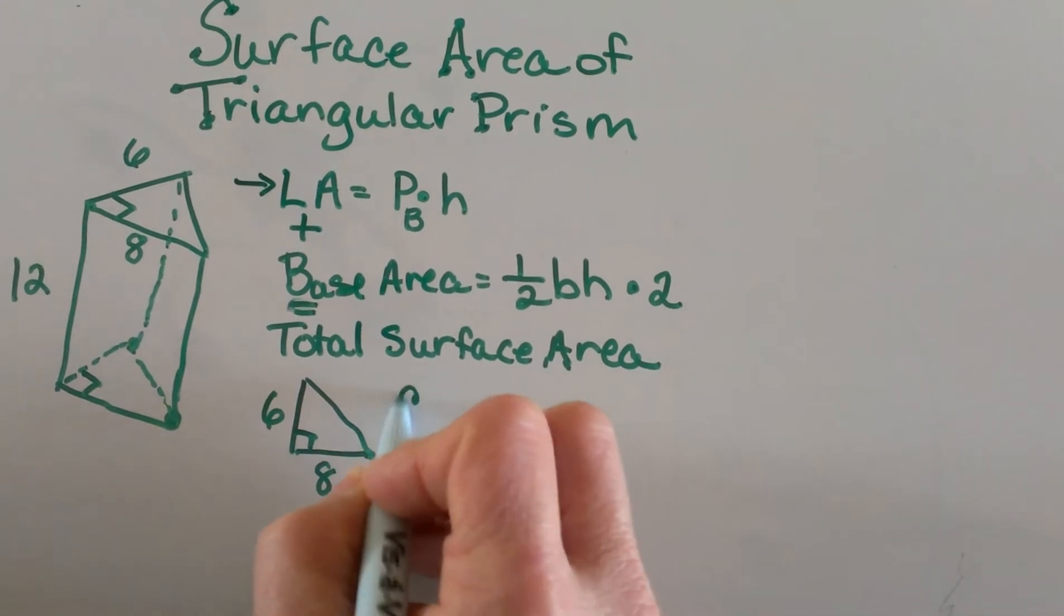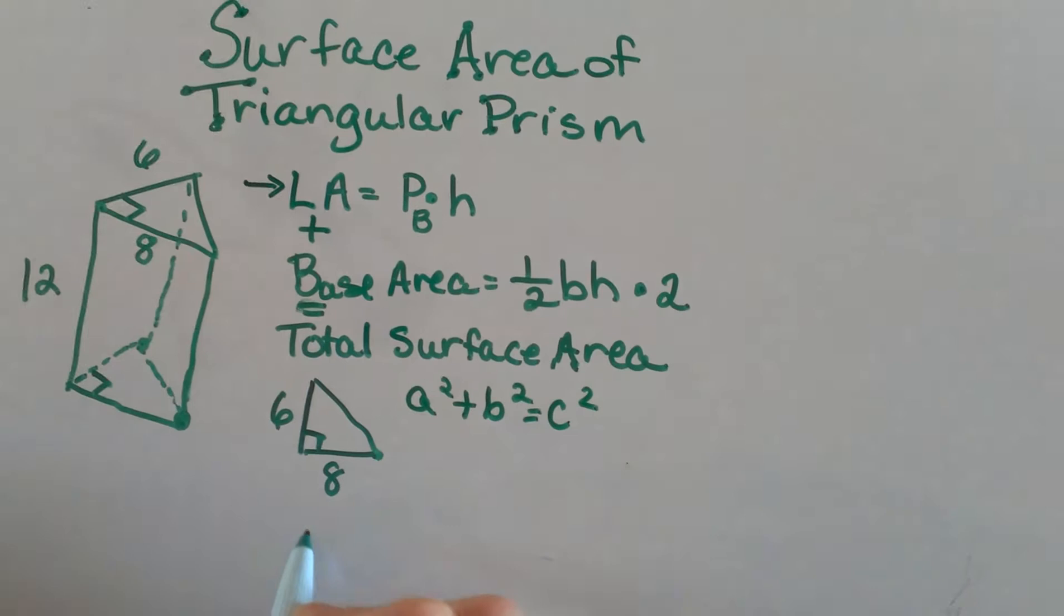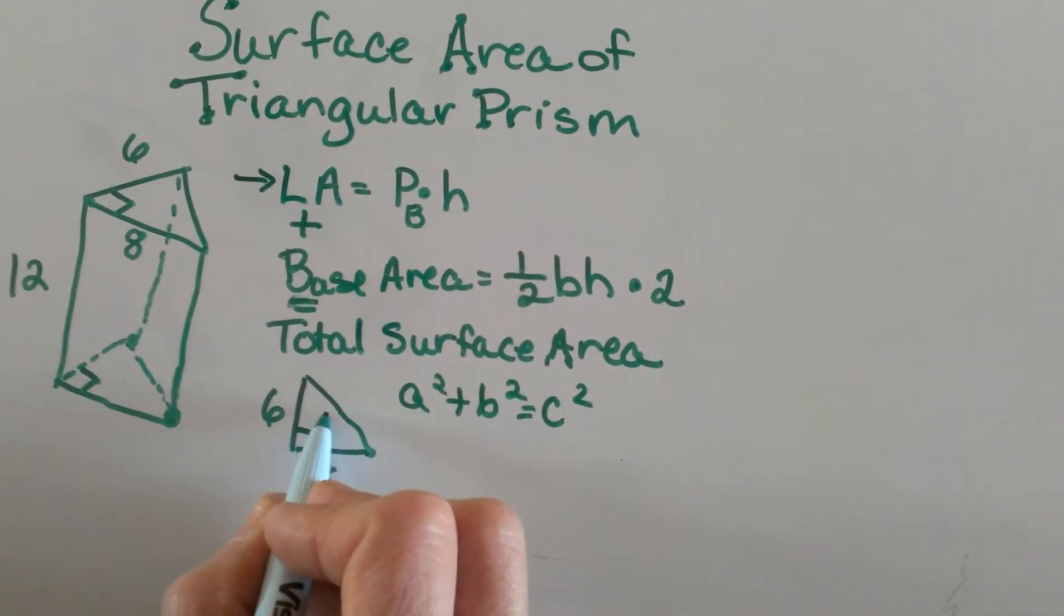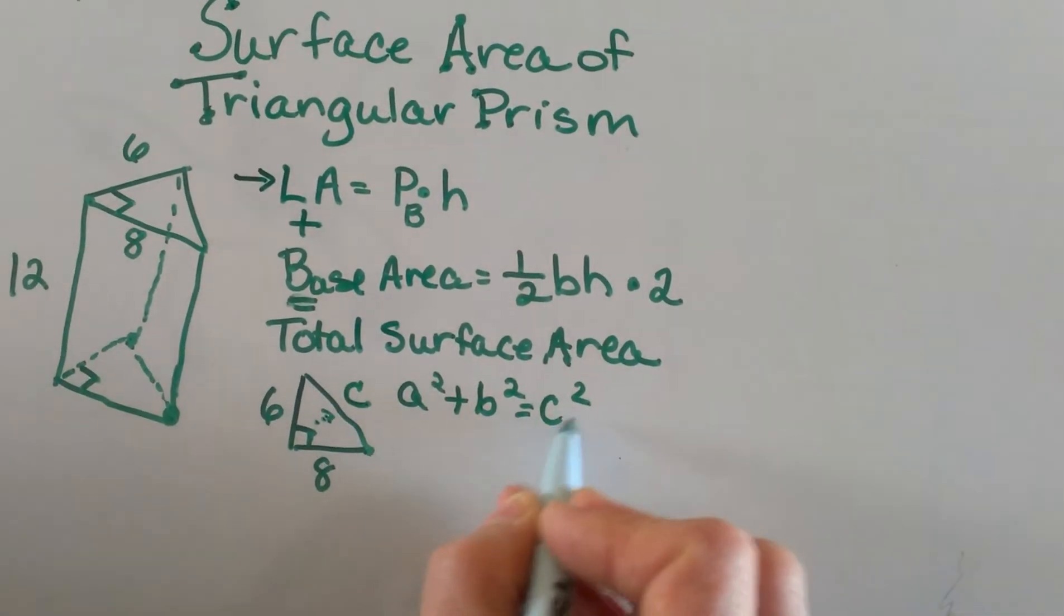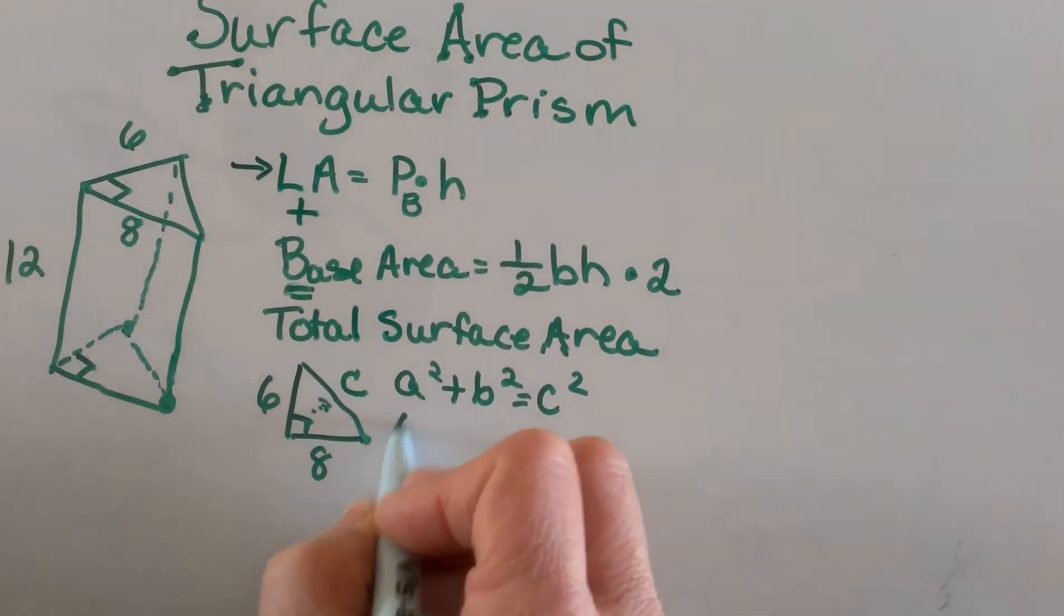I can use the Pythagorean theorem to find the other missing side. Since it's the hypotenuse - opposite the right angle - it's the c portion of the Pythagorean theorem: a² + b² = c². Let's plug in our two legs, 8 and 6, for a and b and solve for c.